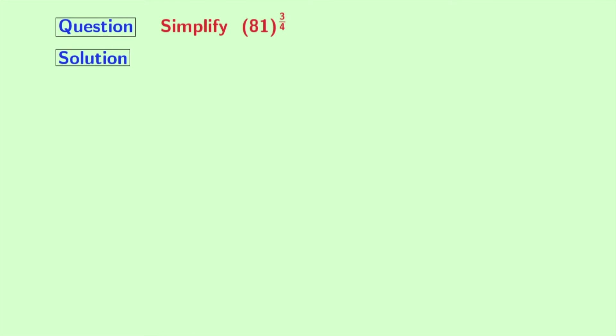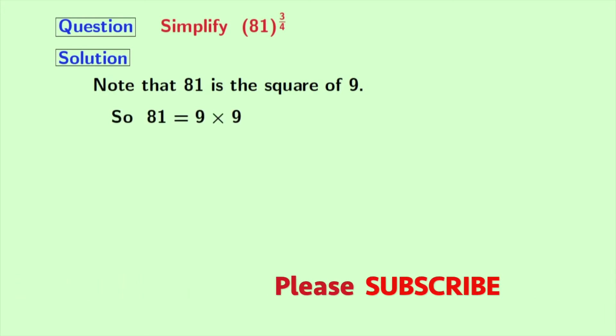So, let's start. Note that 81 is the square of 9. So, we can write 81 as 9 times 9.